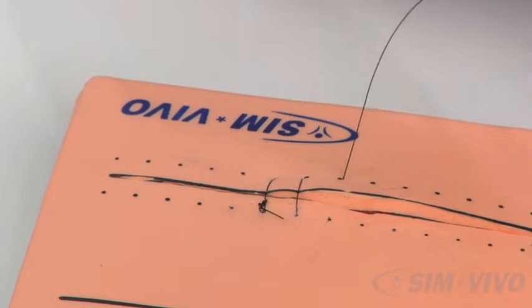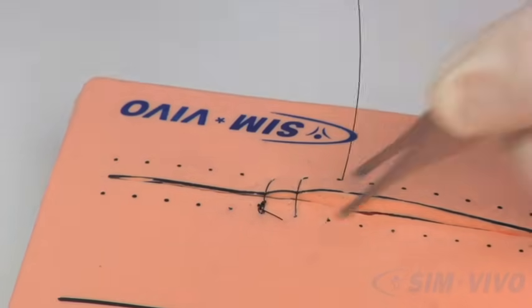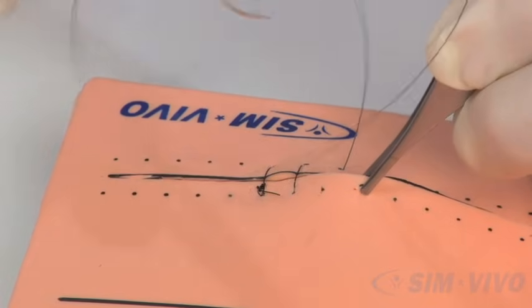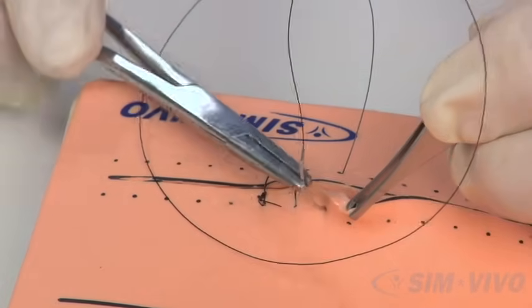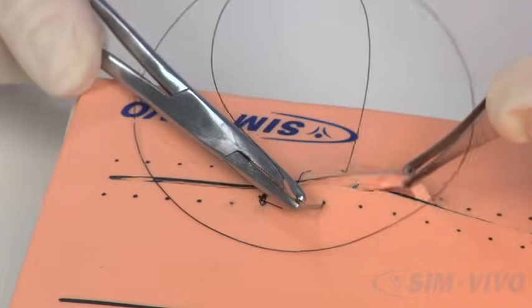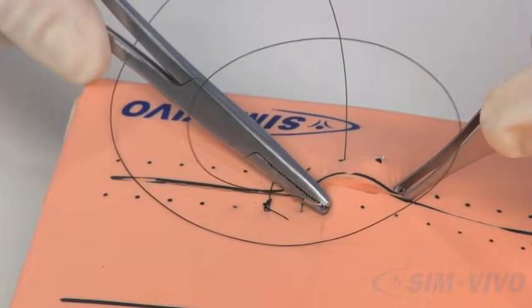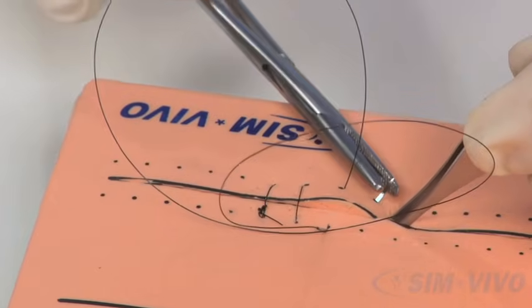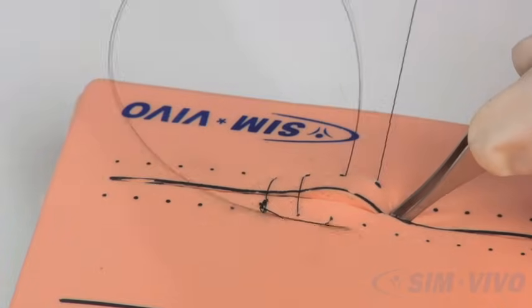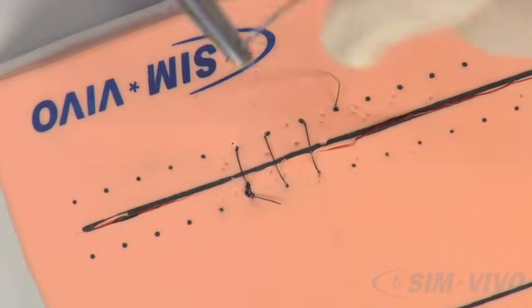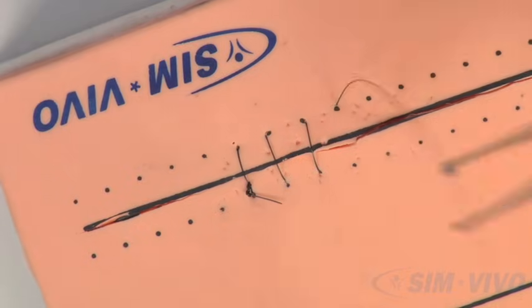Again load the needle. Pick up on the skin, enter at a perpendicular angle, advance to the next dot. Exit at a perpendicular angle and rotate the needle on through. Now we will do two more of these before we tie.